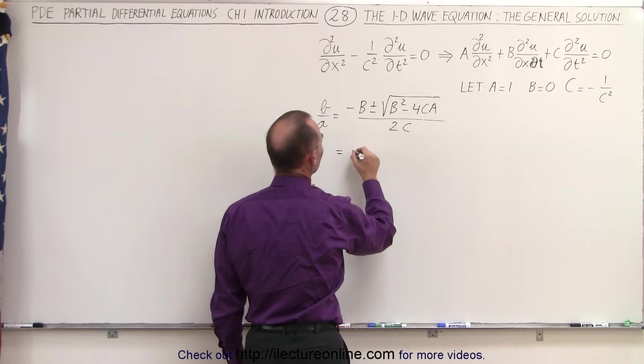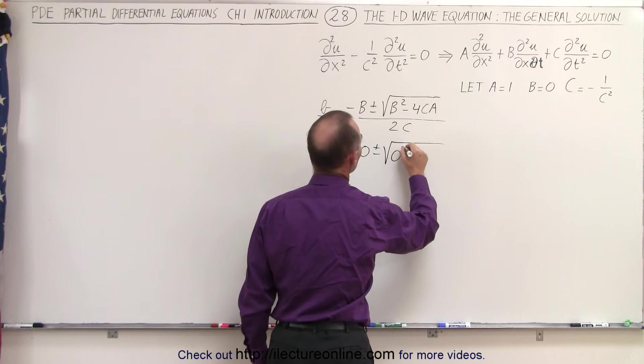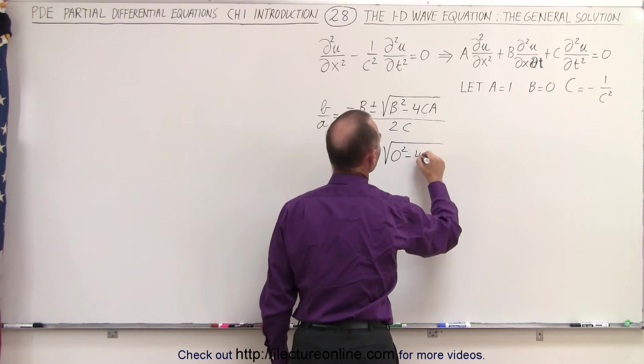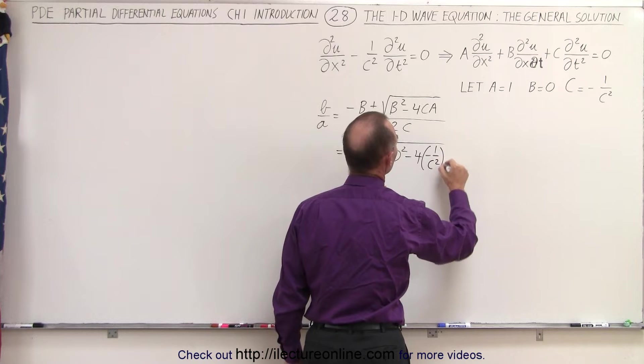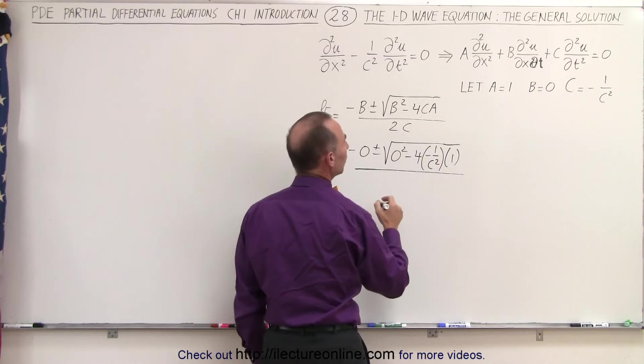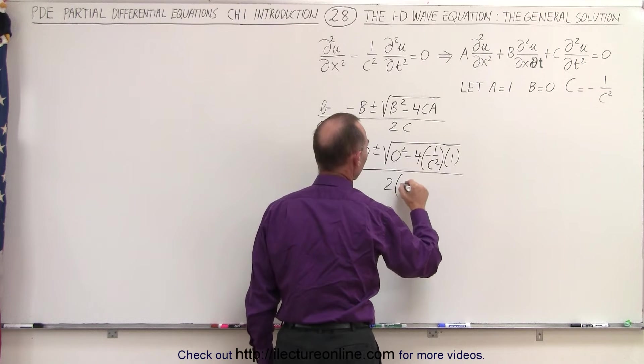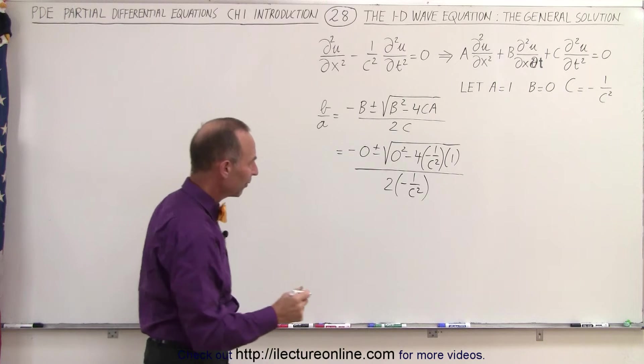We have minus 0 plus and minus the square root of 0 squared minus 4 times c, which is minus 1 over c squared times a, which is equal to 1, all divided by 2c, which would be 2 times minus 1 over c squared. Let's simplify that.